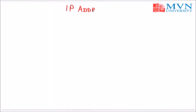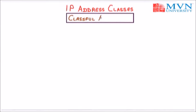Hello friends. The next topic we will discuss today is IP address classes. In the last lecture we discussed IPv4, that is internet protocol version 4. IPv4 is also called simply IP because IPv4 is the default IP that we don't have to specify every time. So an IP address or IPv4 address is divided into five classes: A, B, C, D, and E. This is also called classful addressing.